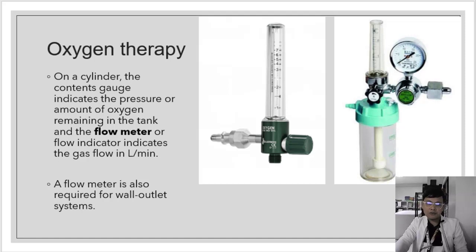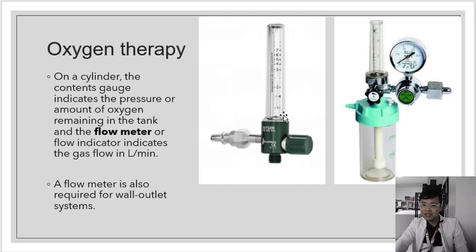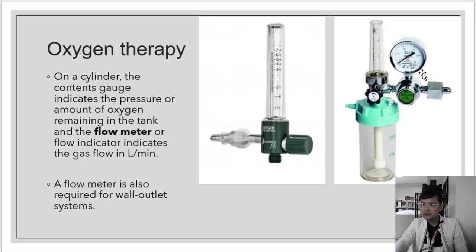The humidifier is attached to the flow meter. The flow meter indicates gas flow in liters per minute — it has a mercury indicator inside — allowing us to adjust and measure how much oxygen flow is being delivered to the patient. The gauge tells us how much oxygen remains in the oxygen tank or wall system.